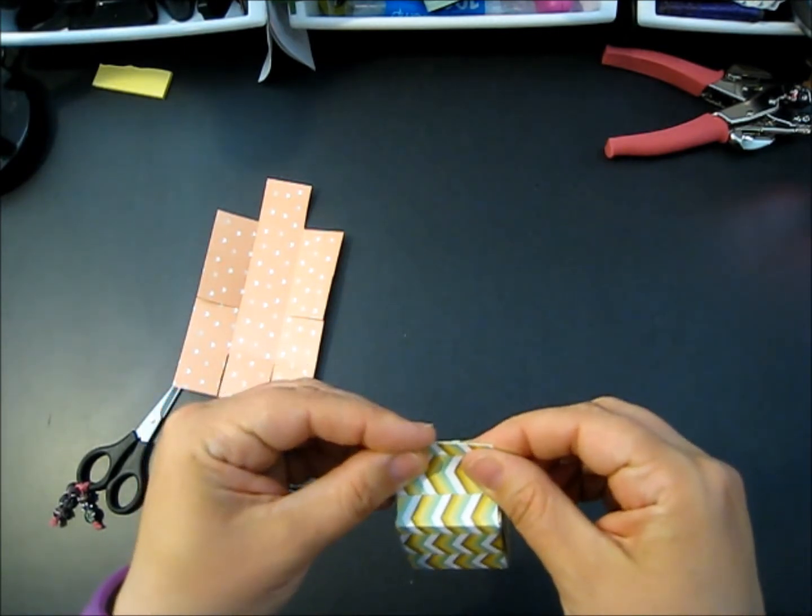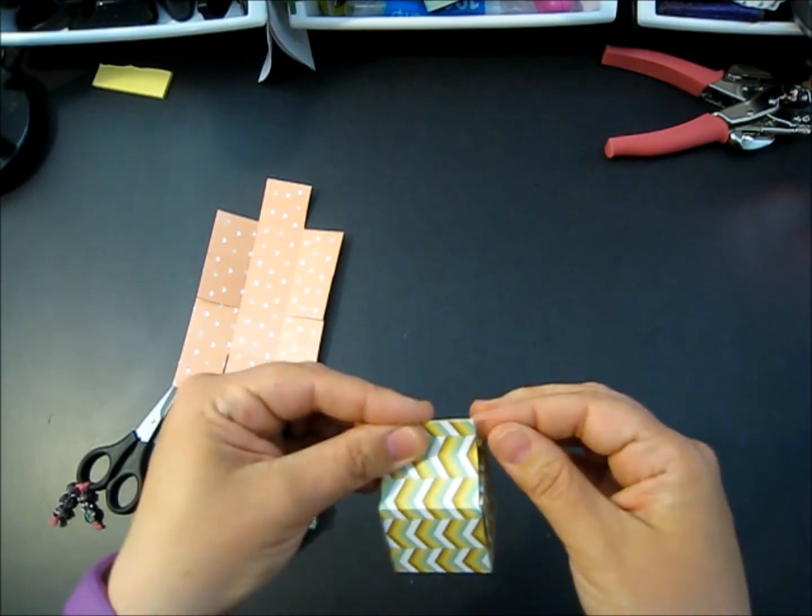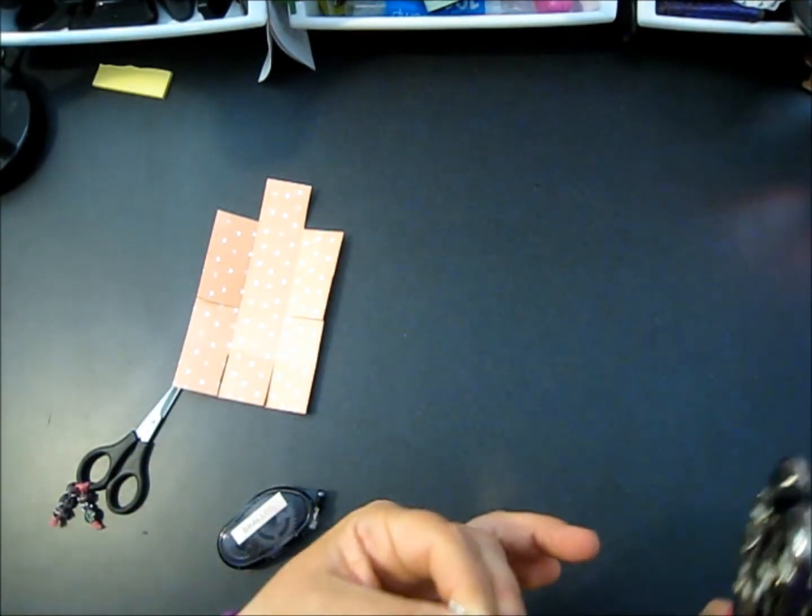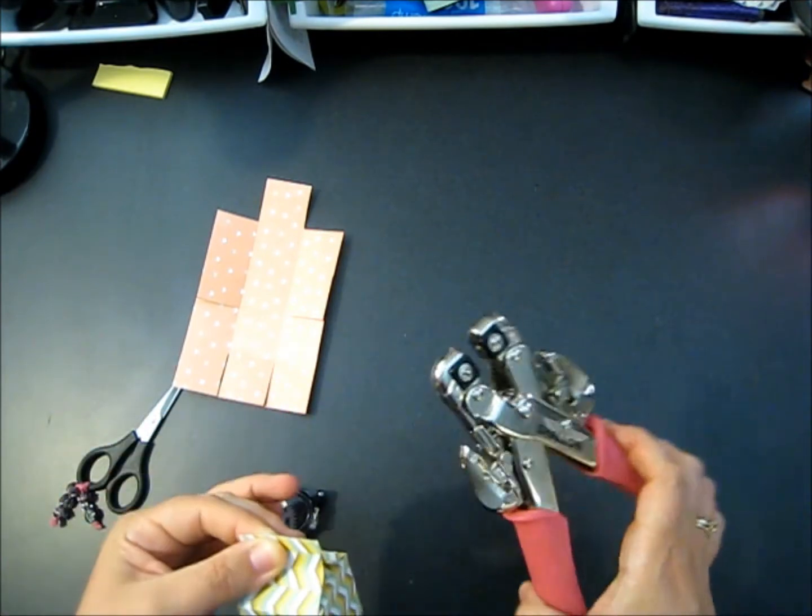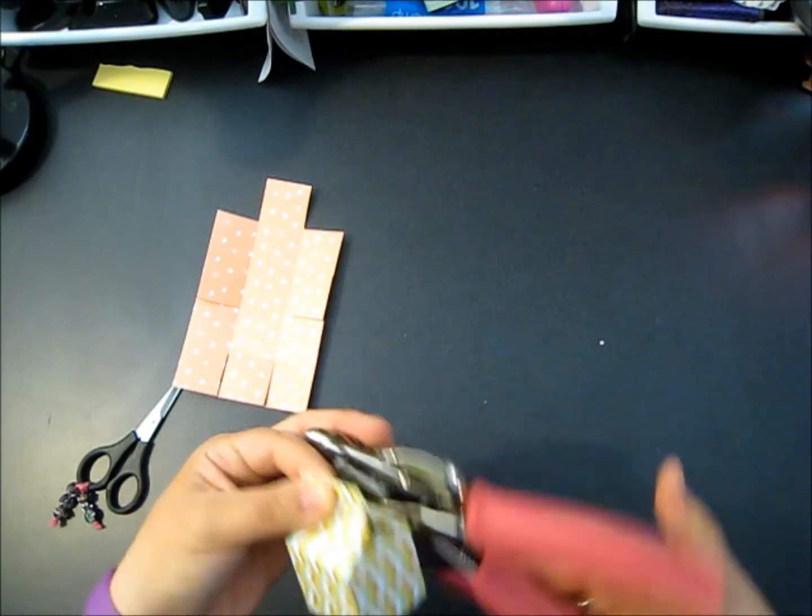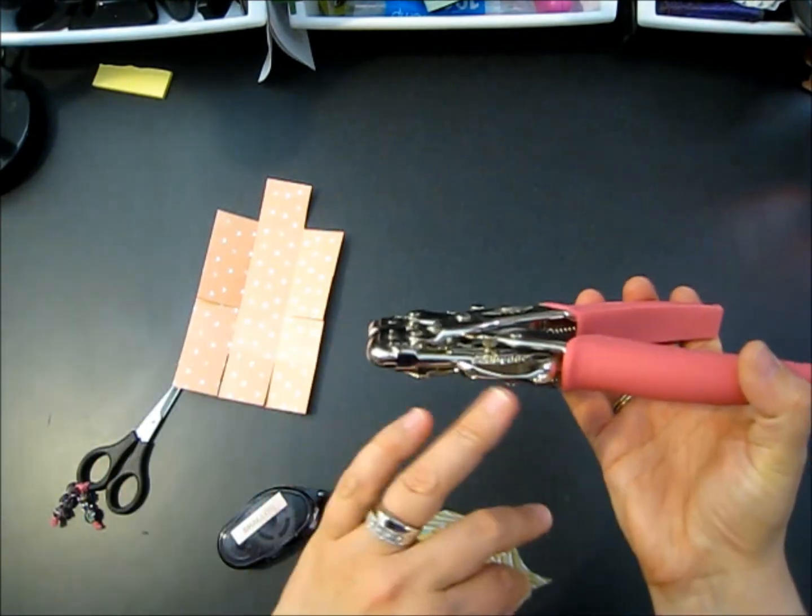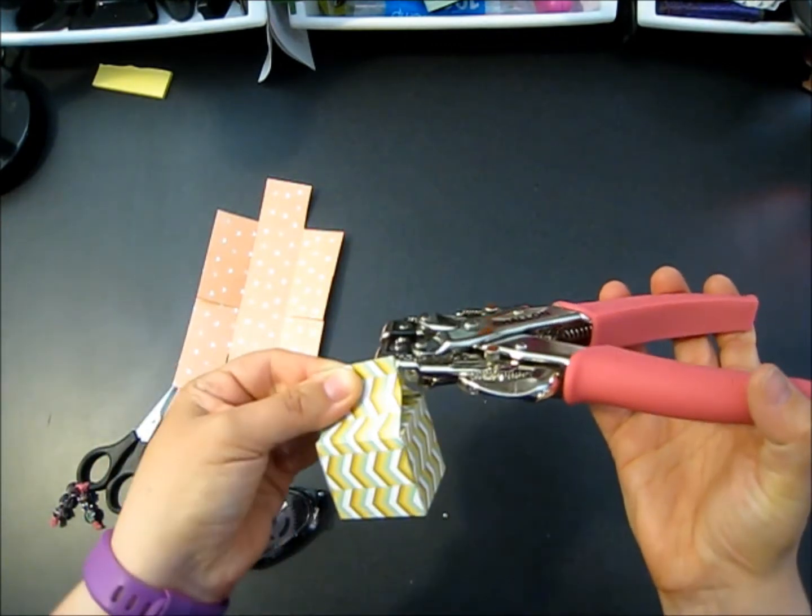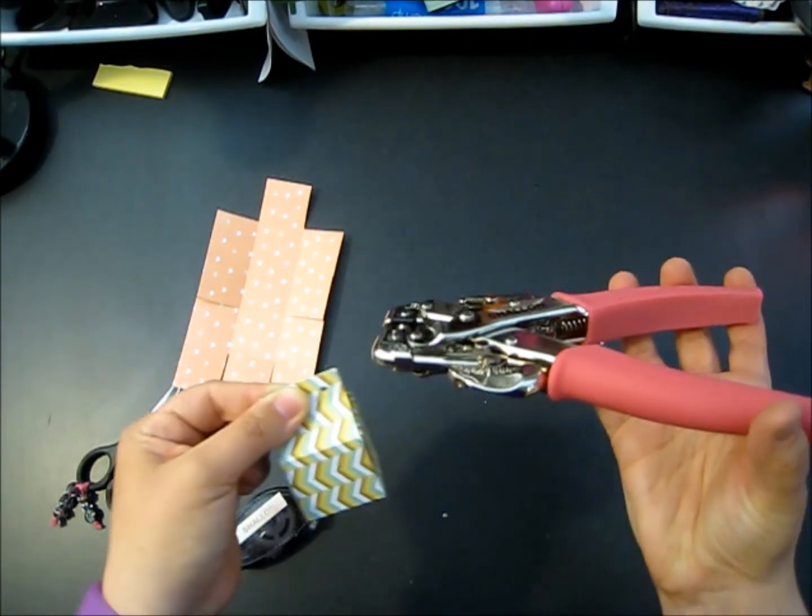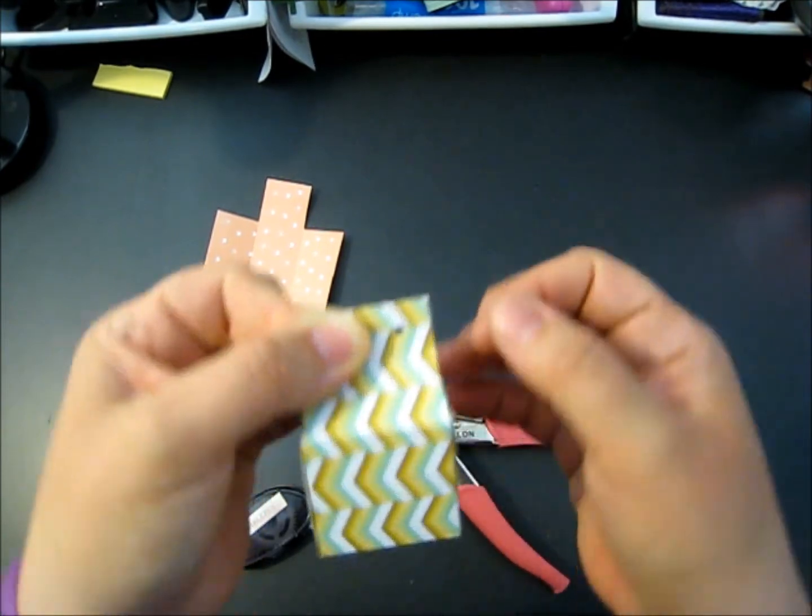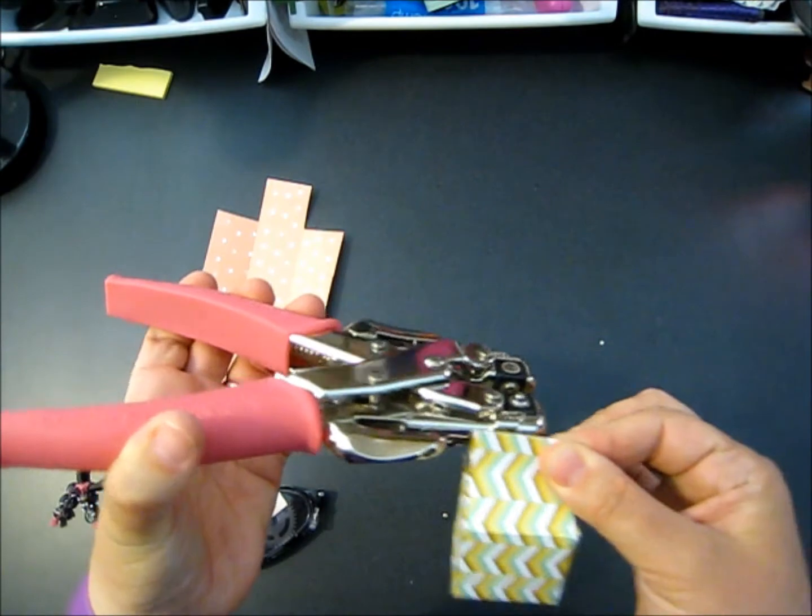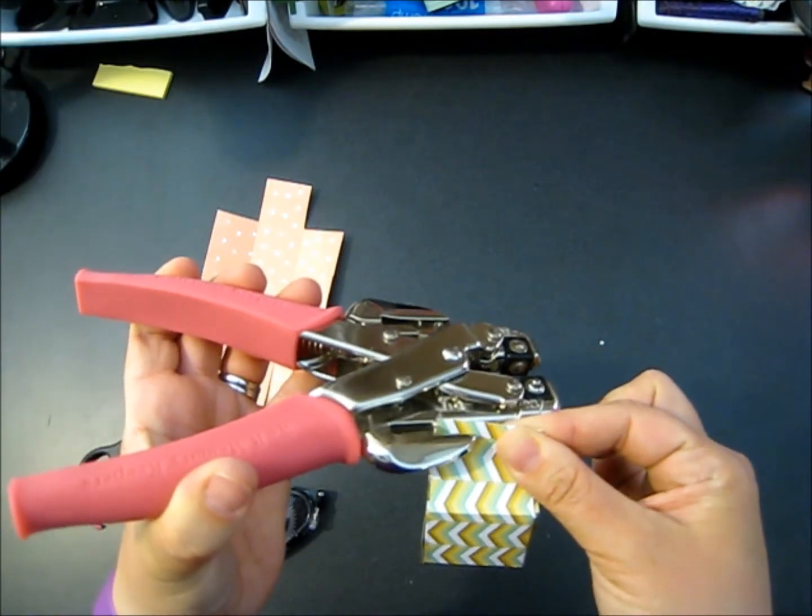I've got the Crop-A-Dile. I've had it for years. I don't have the handheld punches from Stampin' Up yet, they're on my wish list. If you can find a Crop-A-Dile they're wonderful tools. If not, one of the hole punches from Stampin' Up would be perfect. I'm using the smaller hole on this one. I'm just pinching this together, push my DSP in all the way, and we've got a little bit of a hole. That's how small the hole is, just for some baker's twine or some thin ribbon.